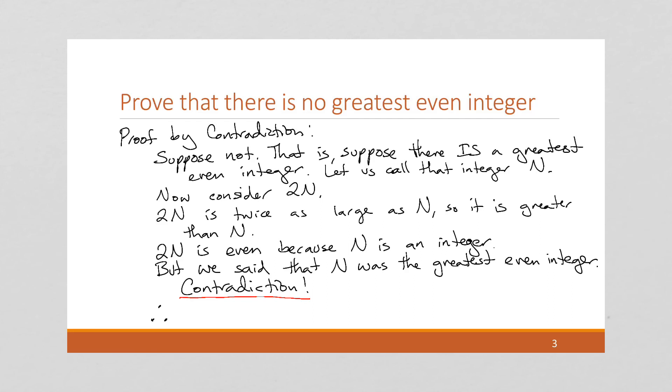That means our supposition, which was right here, is wrong, which means our original statement is right. So, therefore, there is no greatest even integer.